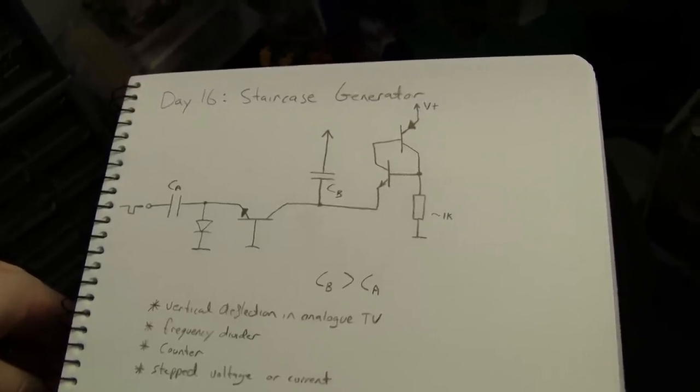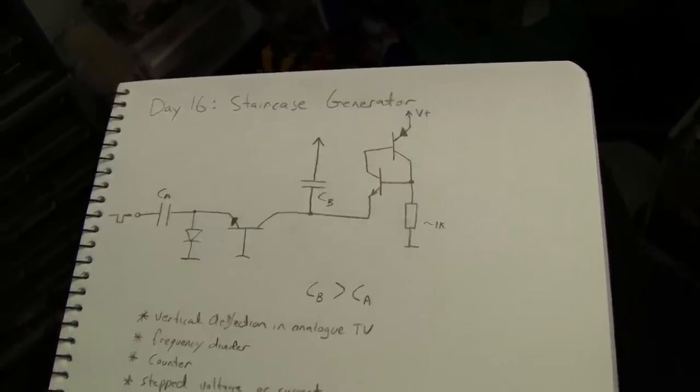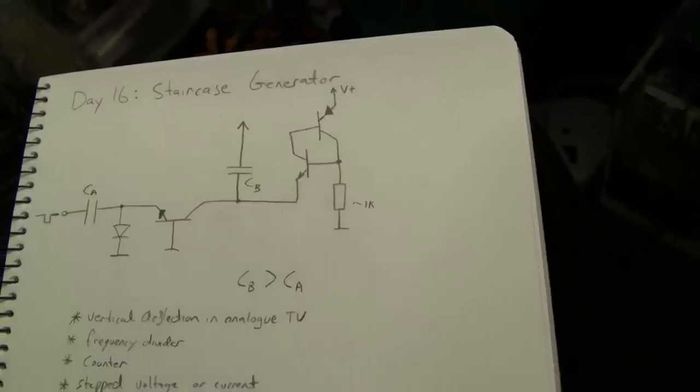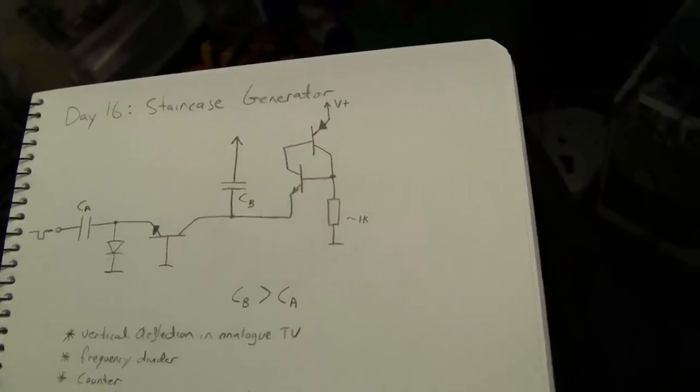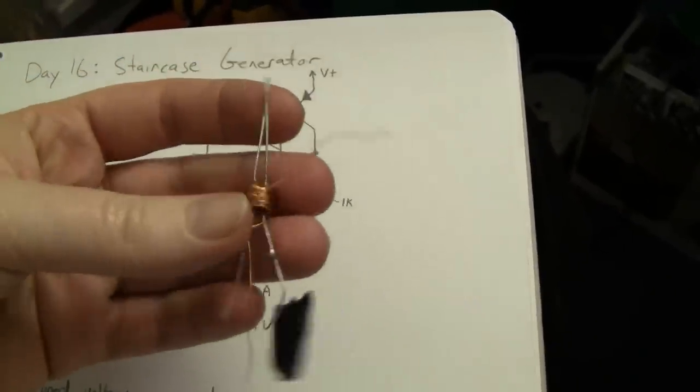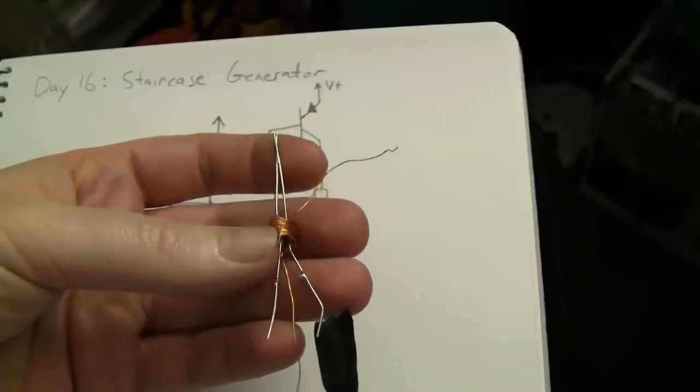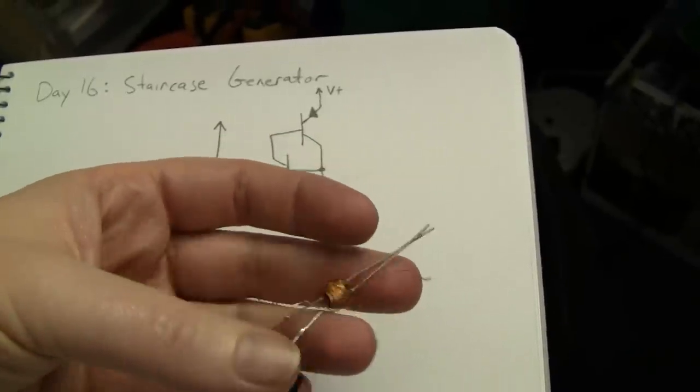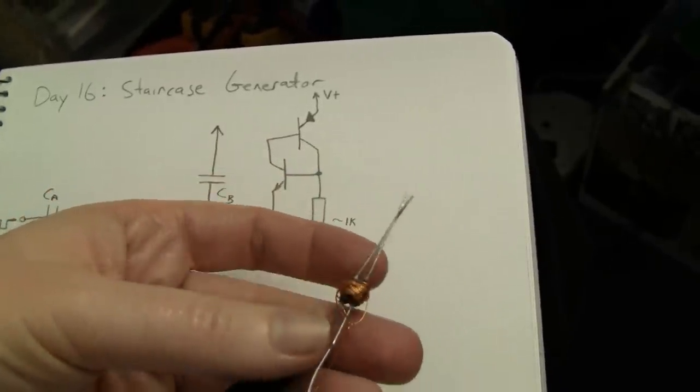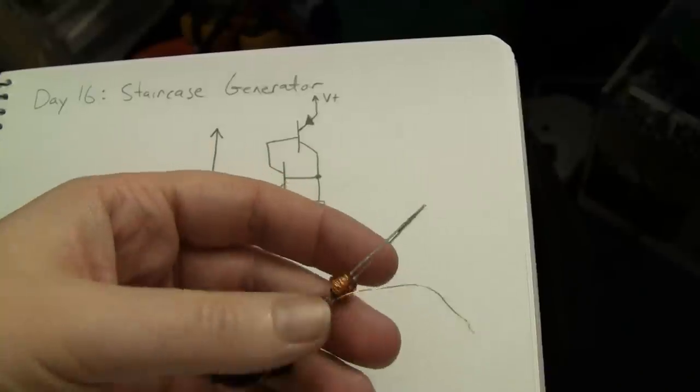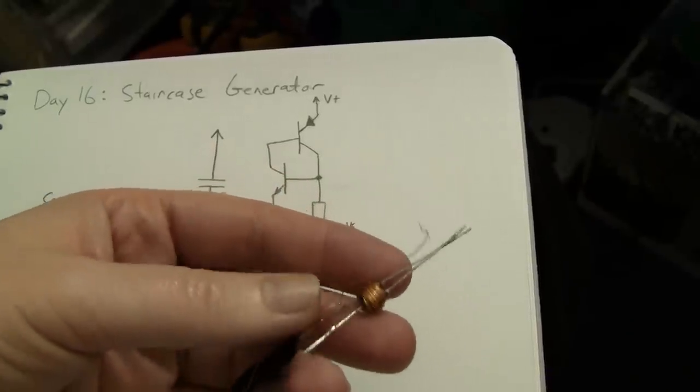Alright. Tomorrow? I don't know. I was trying to get a flux gate magnetometer to work today. I used Burkhard's trick of getting a choke, a pair of chokes, and winding another winding over the top of them. It does sort of work, but it doesn't work well enough for what I wanted to do. I'd have to put a lot more effort into amplifying and cleaning up the signal with a phase sensitive detector.